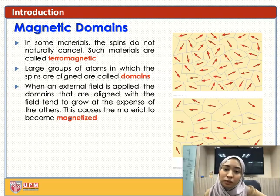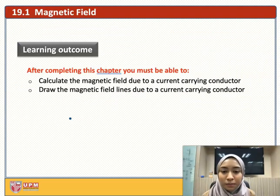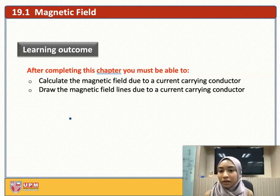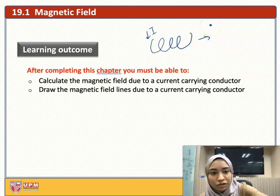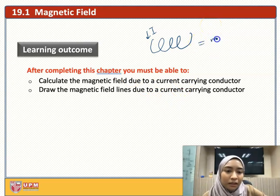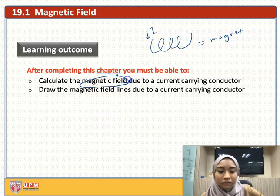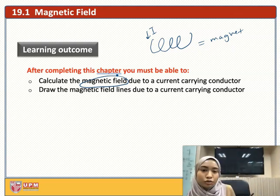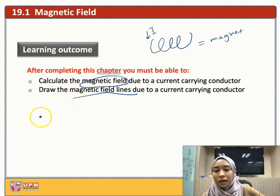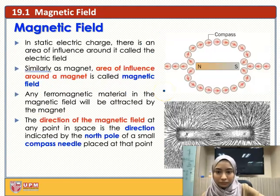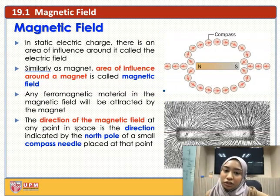After completing this chapter you must be able to calculate the magnetic field due to a current-carrying conductor. As mentioned before, when we have a ferromagnetic material and current I, we will get a magnet, and when you have a magnet you will have a magnetic field. Previously we talked about electricity and electric field and electric force; now we are into magnetism, talking about magnetic fields. Drawing the magnetic field lines is also part of the learning outcome.